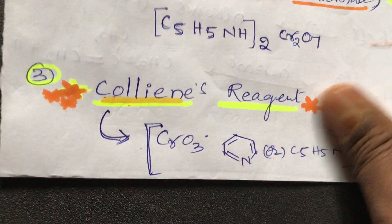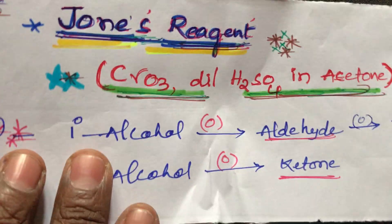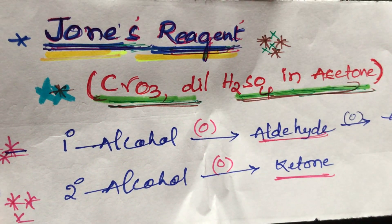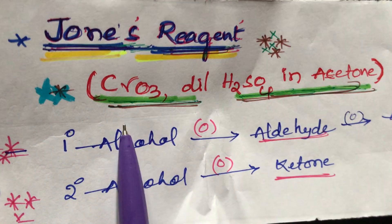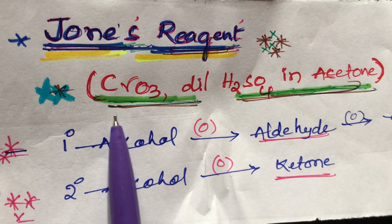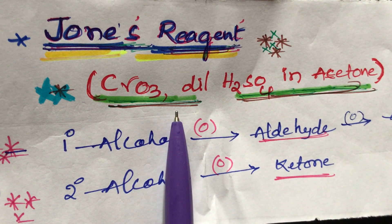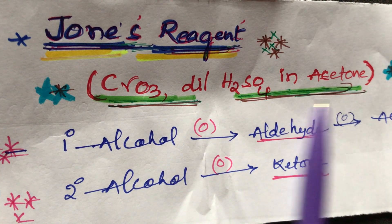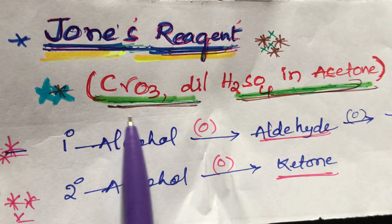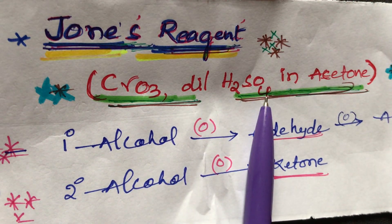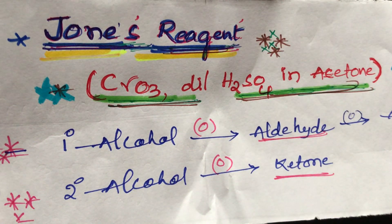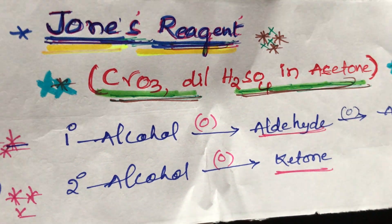Jones reagent is CrO3 with dilute HClO4 in acetone. This is the composition of Jones reagent.